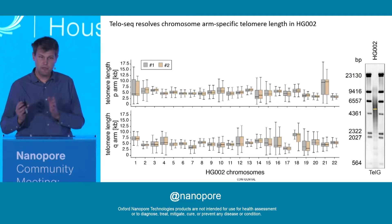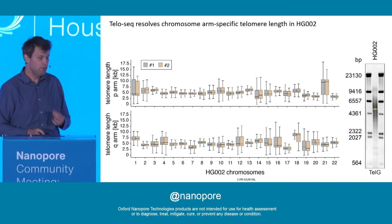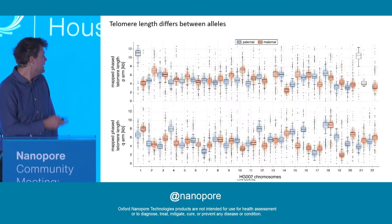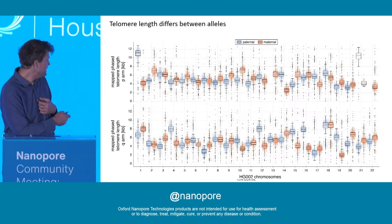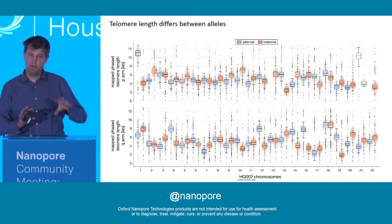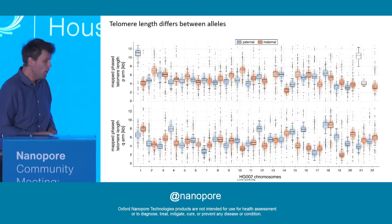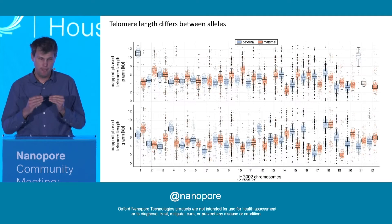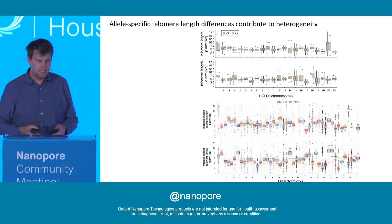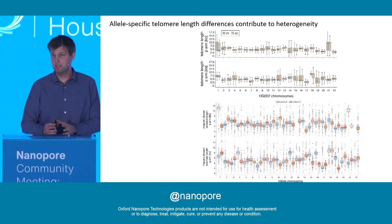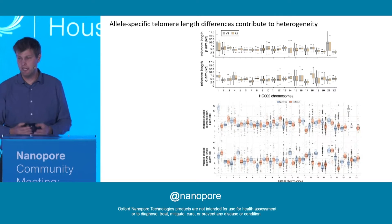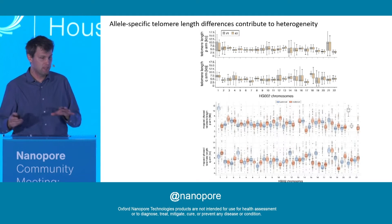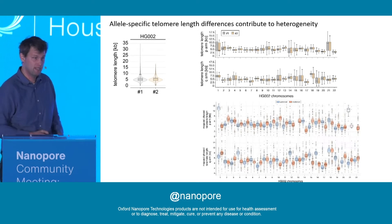To resolve allele-specific telomere lengths, we were fortunate because for HG002, genetic information is available from both the father and mother. If we do that, we observe in chromosome 1P a very strong separation between the maternal and paternal allele, whereas for example in 3P the two alleles have almost the same telomere length. This confirms that inherited allele-specific telomere length differences contribute to the heterogeneity in intra-chromosome arm-specific telomere lengths, which in turn contribute to bulk telomere length heterogeneity.